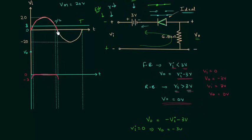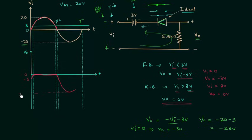When VI = 0, VO = −3V. When −VI = −20V, the output voltage is −20 − 3 = −23V, so the waveform reaches a peak value of −23V. The waveform starts at −3V, dips to −23V, and returns to −3V. This portion is similar to the positive half cycle pattern, and in the same way the waveform repeats itself.